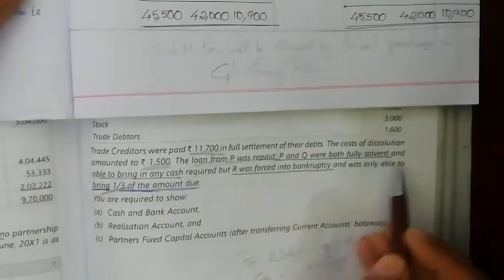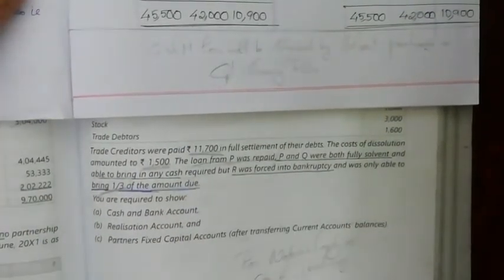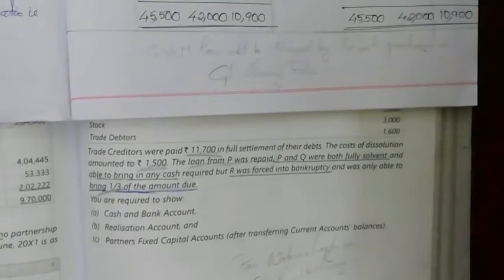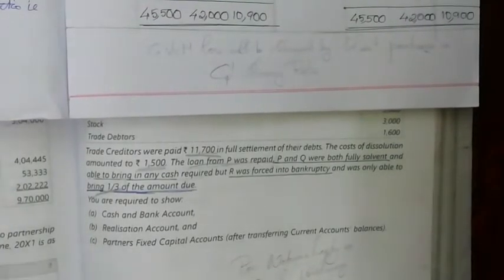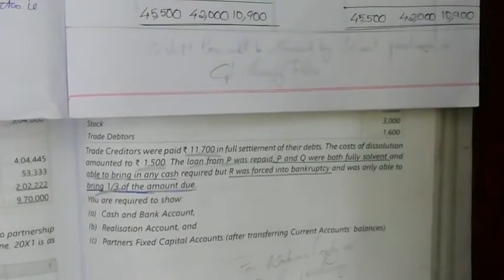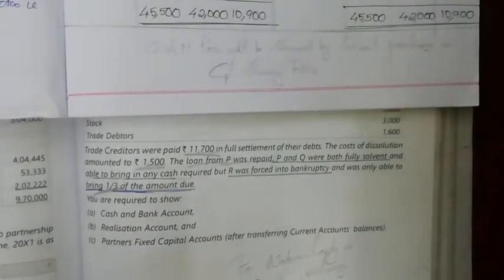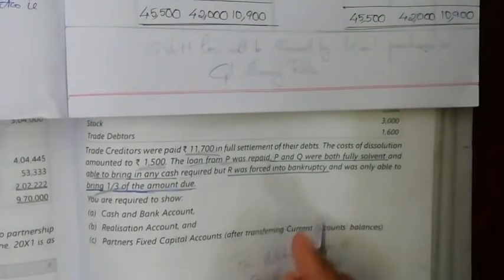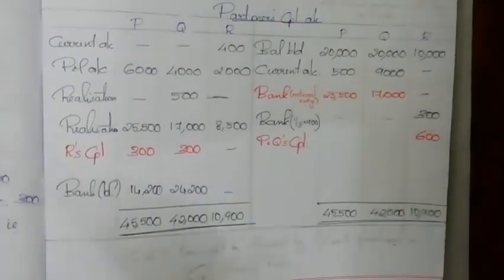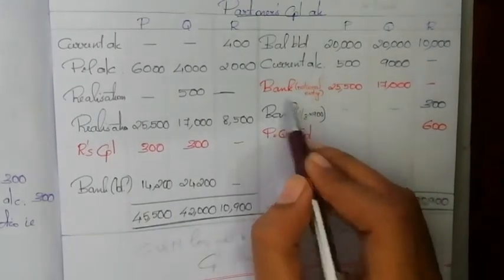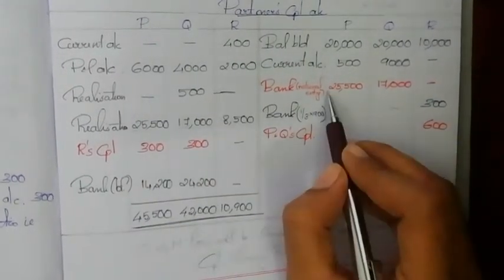P and Q are both fully solvent and able to bring in any cash required, but R was forced into bankruptcy. So here we apply the Notional Entry — Garner vs Murray rule. The realization loss attributable to R will be borne by the fully solvent partners P and Q. Only solvent partners will bring in cash.